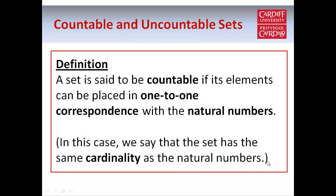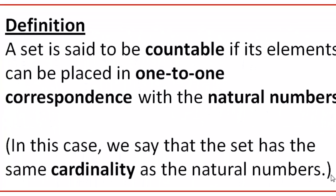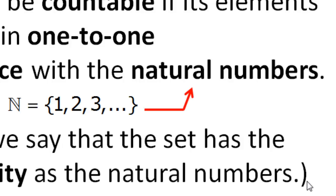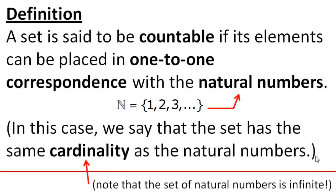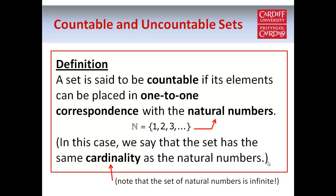Here's a definition: a set is said to be countable if its elements can be placed in one-to-one correspondence with the natural numbers. And when a set is countable, we say that it has the same cardinality as the set of natural numbers. When we refer to the natural numbers, we mean the counting numbers 1, 2, 3, and so on. The set of natural numbers is actually infinite, so it's not easy to explain what we mean by the cardinality of an infinite set. But we can talk about what it means for two infinite sets to have the same cardinality.